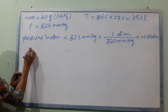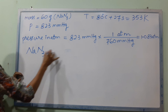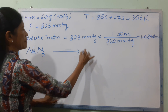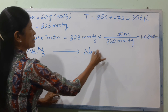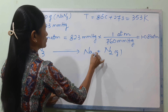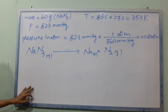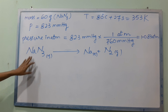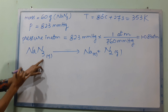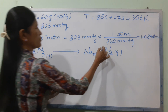So 760 mmHg gives 1.083 ATM. Now we are going to use sodium azide NaN3 to decompose the equation here. NaN3 decomposes in solution. NaN3 is a solid. NaN3 is solid.